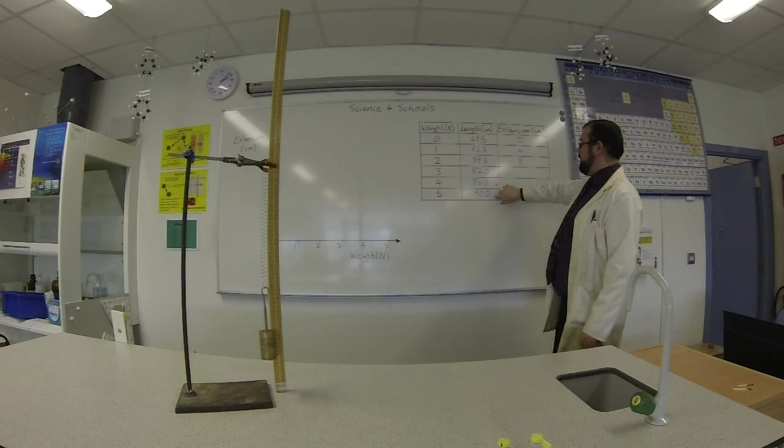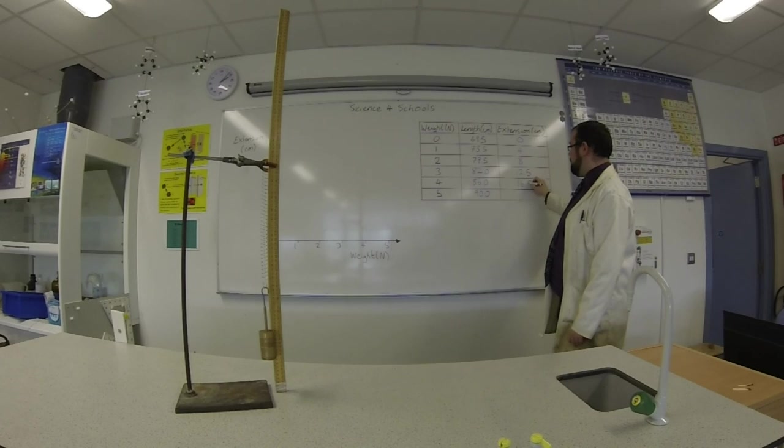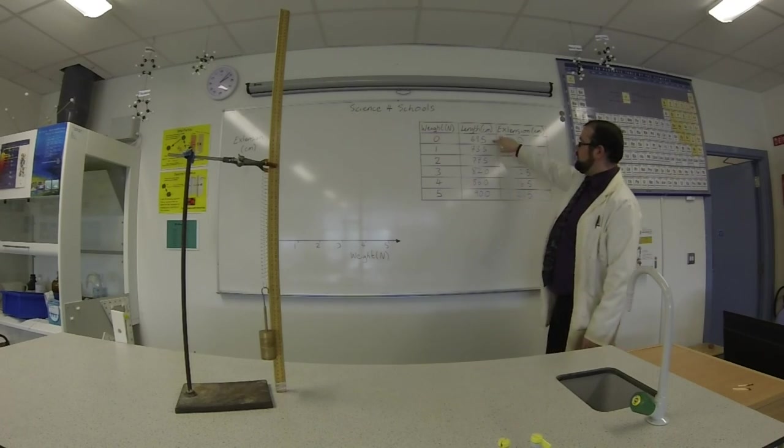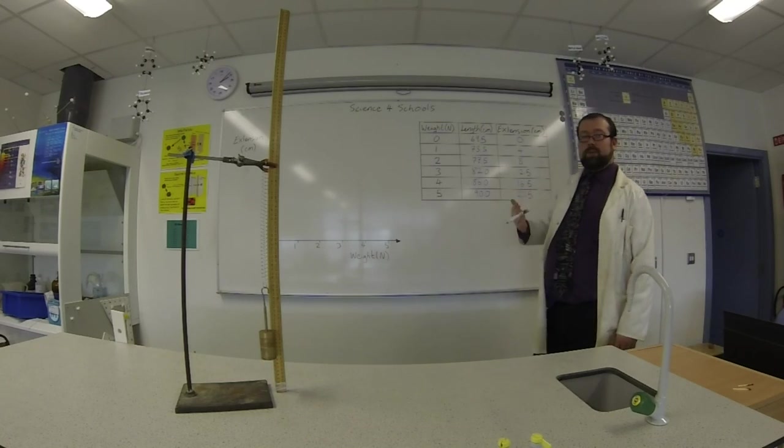And we do the same for these next three. We're going to get 12.5, 16.5, and 20.5. In each case, take the original length from the current length. That is how much longer it is.